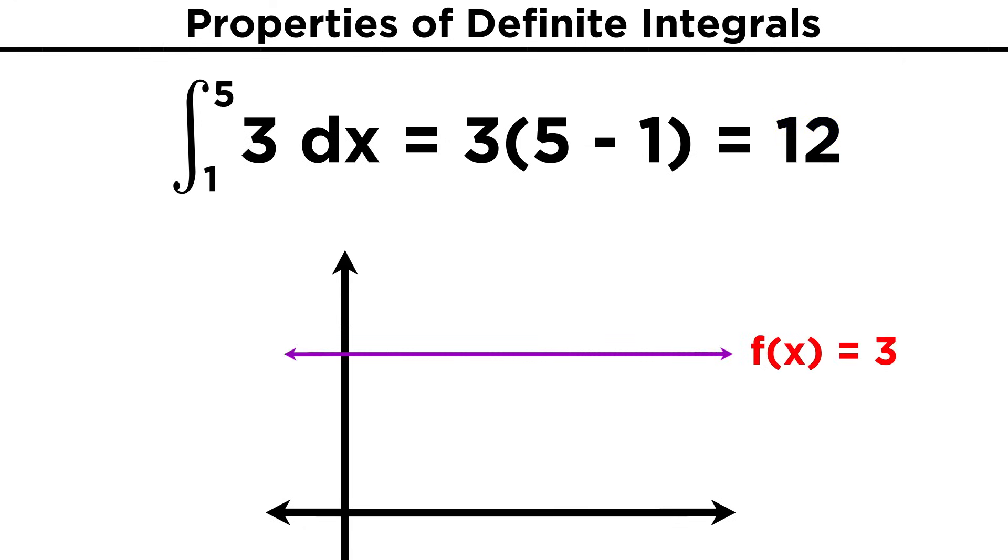This makes sense if you think of the function y equals three. If we chop this off at one and five, this is now just a rectangle with a constant height of three. So multiplying by the difference of these limits is the same as calculating base times height, which gives us the area of the rectangle.